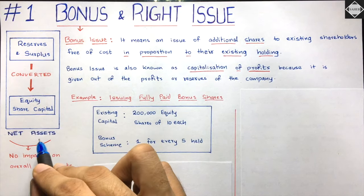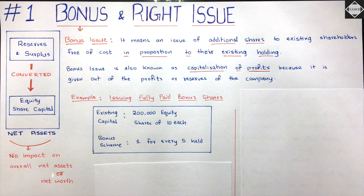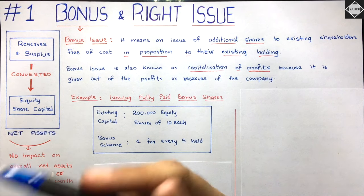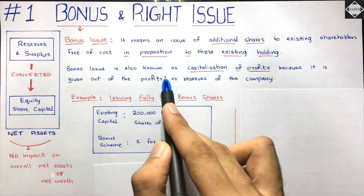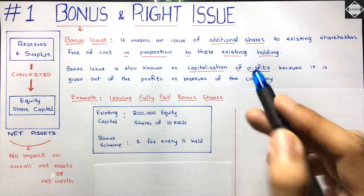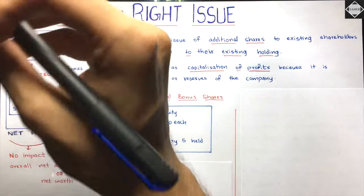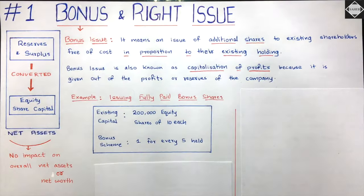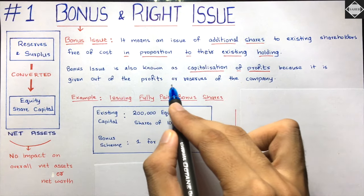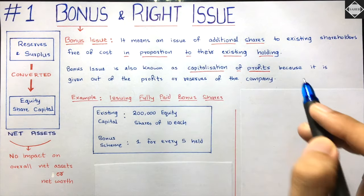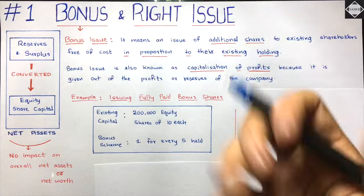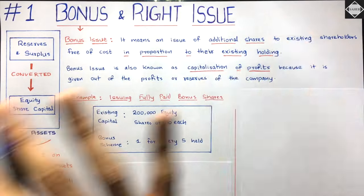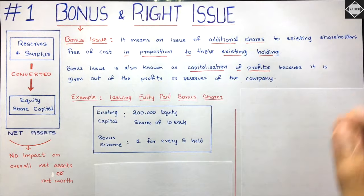There is no impact on the net assets of the company. That is why bonus issue is also known as capitalization of profits - profits and reserves have been capitalized and converted into equity share capital. Because it's given out of profits or reserves, if you don't have profits or reserves you cannot do a bonus issue.